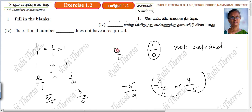All the numbers have 1 in the denominator. 1 by 1 is 1; reciprocal of 1 is 1 by 0. But 0 is not defined.